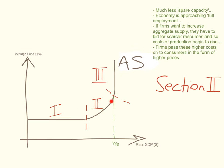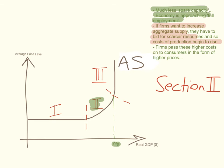What about section two? In section two, the economy is slowly starting to approach its full employment level of output — it hasn't yet arrived at full employment, but it's approaching. There's much less spare capacity. If the aggregate demand curve intersects somewhere in section two and firms want to increase aggregate supply, they would have to bid for scarcer resources, so the costs of production begin to rise.